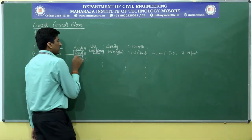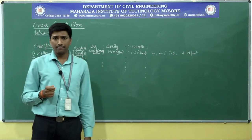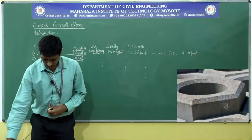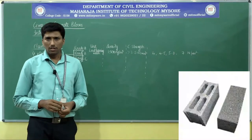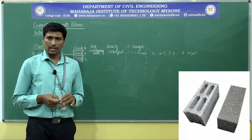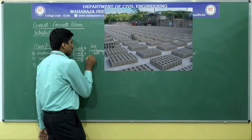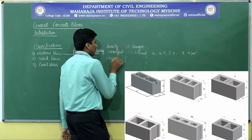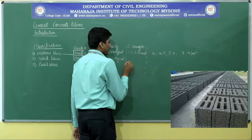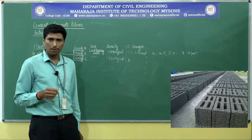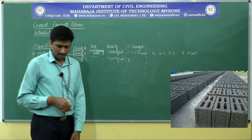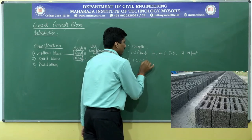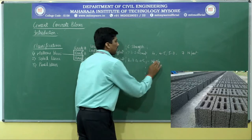Grade B hollow blocks are another category, also used for load bearing walls, but their compressive strength is slightly lesser than Grade A. The density remains the same, while the compressive strength ranges from 1.5, 2, 3.5, 4.5, and 5 Newton per mm², or in certain cases 2, 3, 4.5 Newton per mm² and so on.